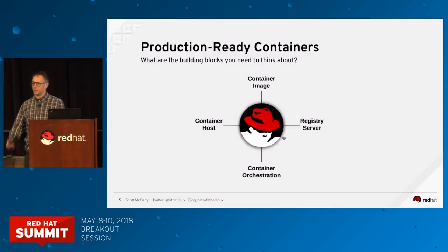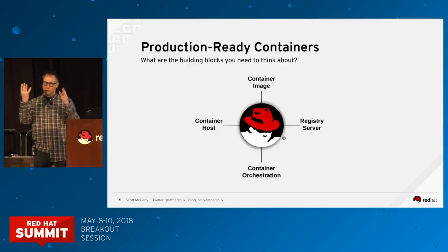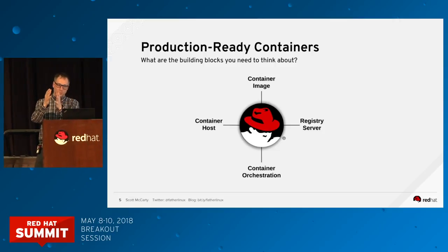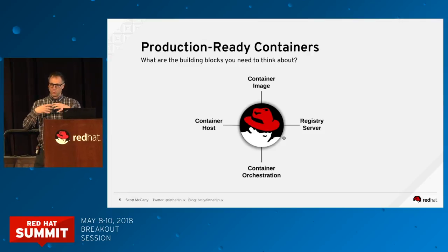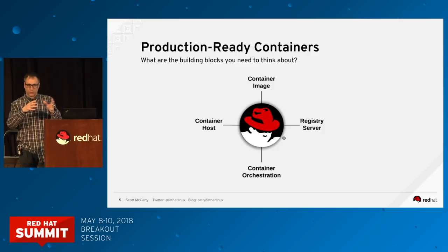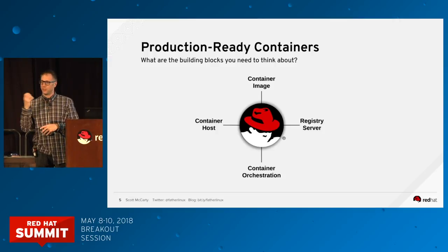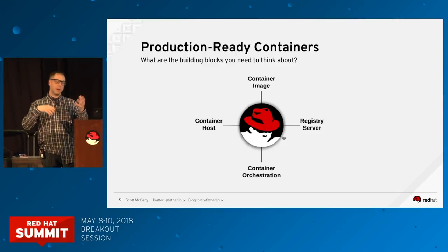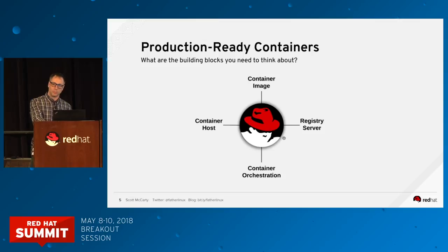Everything you know now as an architect, developer, or systems admin still matters. You just have to add four new primitives to your tool belt: container images, container hosts, orchestration, and registry servers. We're mostly going to focus on container images in this talk, but even when building images it ties back to the other three—how they'll run in an orchestrated environment, how you'll get data to them, how to embed or not embed passwords.